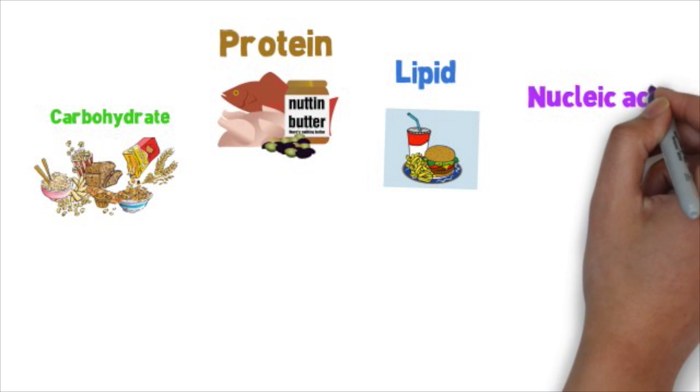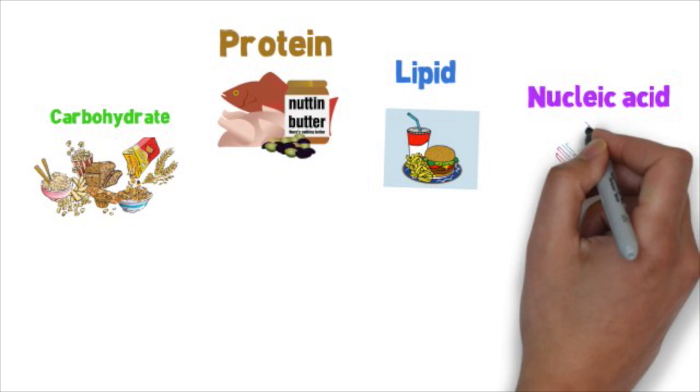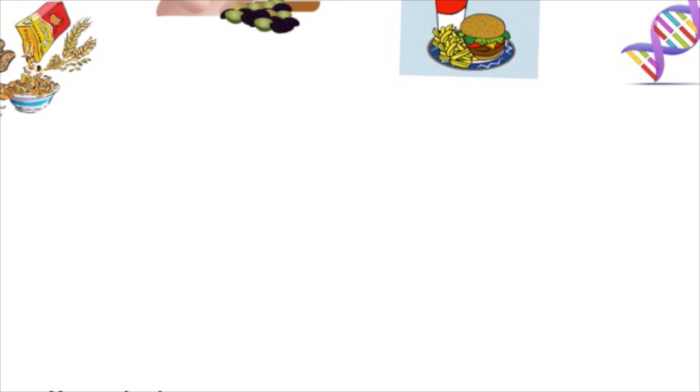Lastly, nucleic acids are responsible for passing and storing genetic information. DNA is an example of a nucleic acid. DNA is called the blueprint of life because it contains instructions for making every protein in your body.